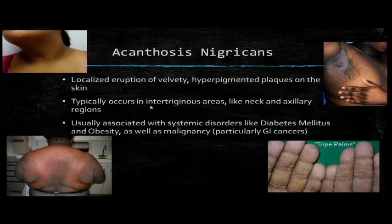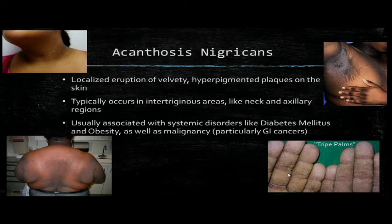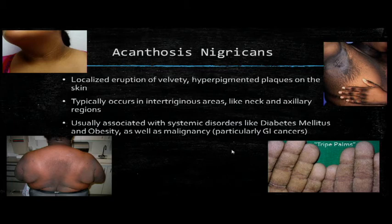Acanthosis nigricans affects men, women, and children equally but has more prevalence in Native American, Hispanic, and Black populations compared to Asians or Caucasians. Acanthosis can also present on mucosal surfaces, which is more strongly linked with malignancy. When acanthosis rises rapidly and occurs on the palms or soles or all over the body, suspect an underlying malignancy — typically GI or lung cancer — and this can also present with tripe palms. Although we associate acanthosis nigricans with diabetes and obesity, it can also be familial, non-syndromic, or part of genetic disorders like Down syndrome or congenital lipodystrophy.